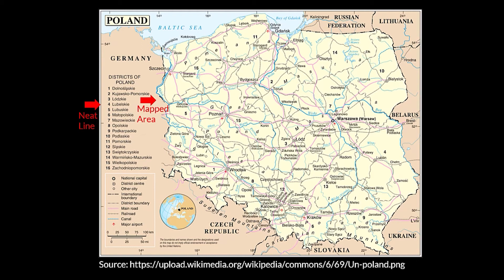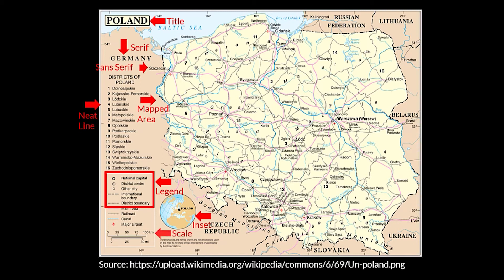The inset shows the broader context for where Poland is located in the world. The map title — note how the map title for Poland and the surrounding country names like Germany are shown using a serif font, while the names of cities in Poland are shown using a sans-serif font. The map legend shows many examples of ordinal data in terms of ranking of cities and boundary types. And finally, the scale bars, which in this example are shown both in kilometers and miles.